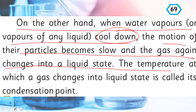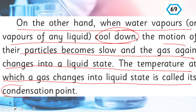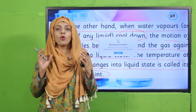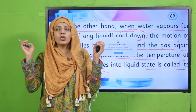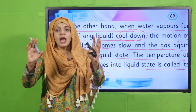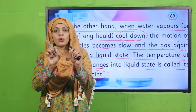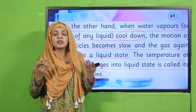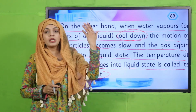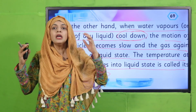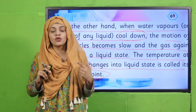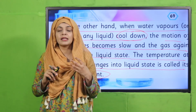The temperature at which a gas changes into liquid state is called its condensation point. Agar gas ko ya water vapors ko thanda kiya jai, toh woh apni energy release kerte hain, slow move kerte hain, aur the temperature at which the gas turns back into liquid is called its condensation point. Isi tarah se jab baarish hoti hai, bukharat jab kisi thandi jagah se guzarti hai, toh they turn into rain droplets — ye ek natural process hai. Aur mein iske ooper ek experiment bhi dikhaongi ki kaise condensation hoti hai.